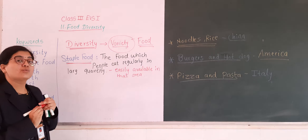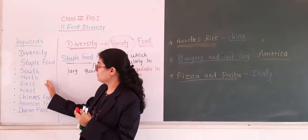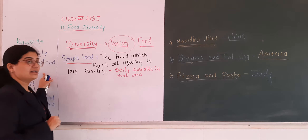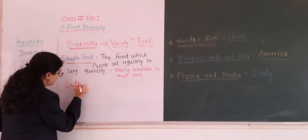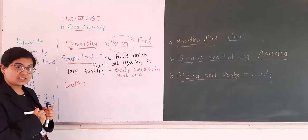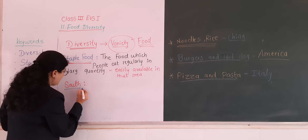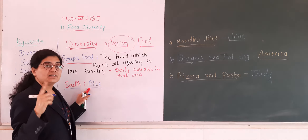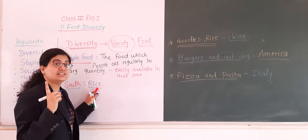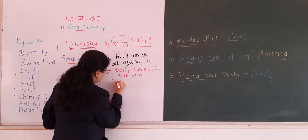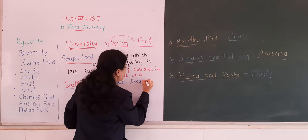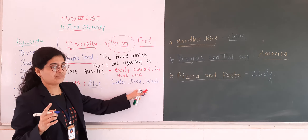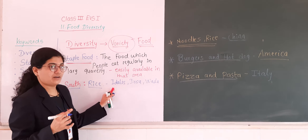Now we are going to discuss food items that are easily available in different regions of India. First, let us learn about the staple food of the south region. In south India, people eat rice — rice is the staple food of that region. They make different food items using rice. South Indian food items include idli, dosa, and vada. These are the staple food of south India, and people also eat sambar.